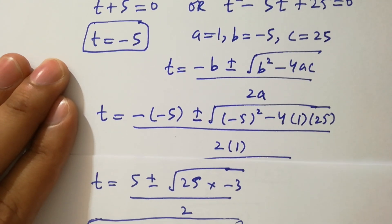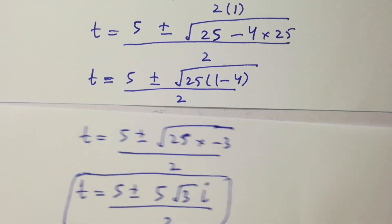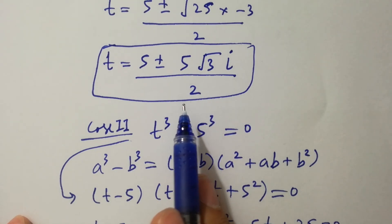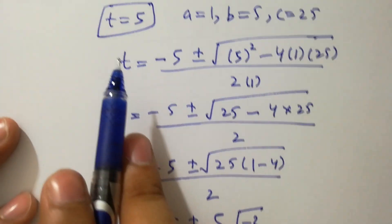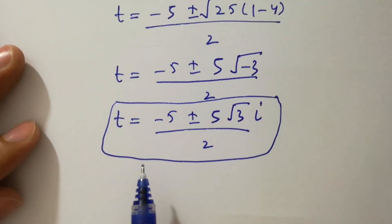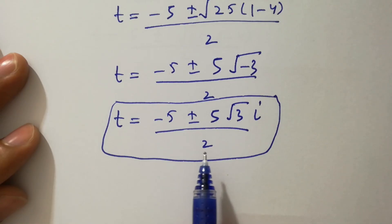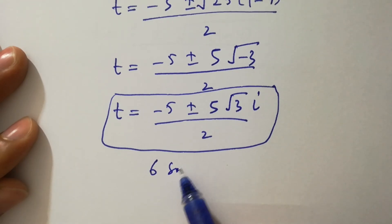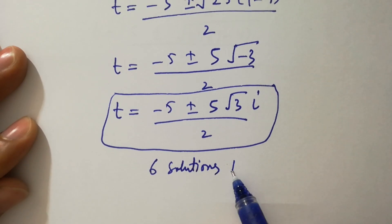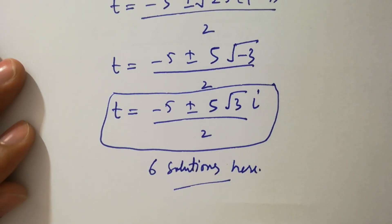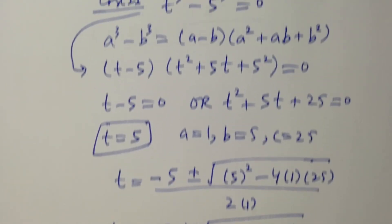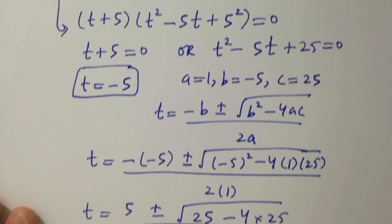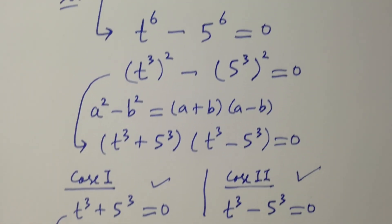So finally we have six solutions in total: t = −5, t = (5 ± 5√3 i) / 2, t = 5, and t = (−5 ± 5√3 i) / 2. Thanks for watching this video. Please subscribe to the channel to get notifications of new videos, and don't forget to share with your classmates and friends. Okay, bye.